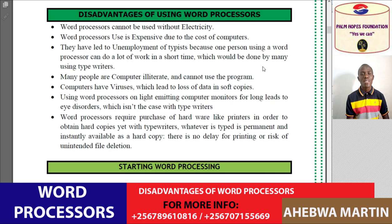Disadvantage number five: computers have viruses which lead to loss of data in soft copies. Computer viruses are malicious programs designed by malicious people. These programs exist in soft copy format, and we get them from various places — for example, the internet, sharing of removable storage devices, and external devices. These software programs are normally affected by computer viruses, such as when someone brings a flash drive from a library.